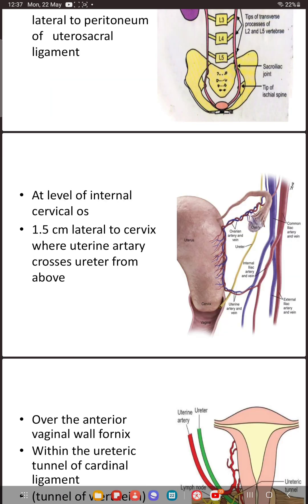At the level of the internal cervical os, the ureter lies 1.5 centimeters lateral to the cervix. When you are placing a clamp at this level, if you go too laterally or take one or two extra clamps medially, you might injure the ureter.